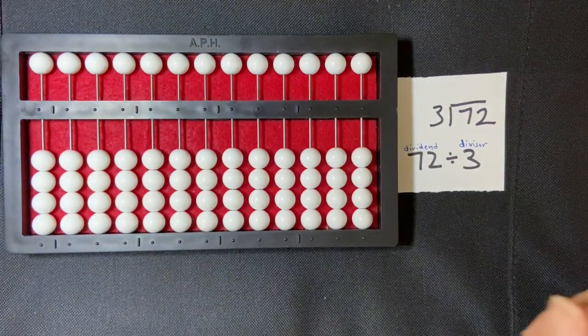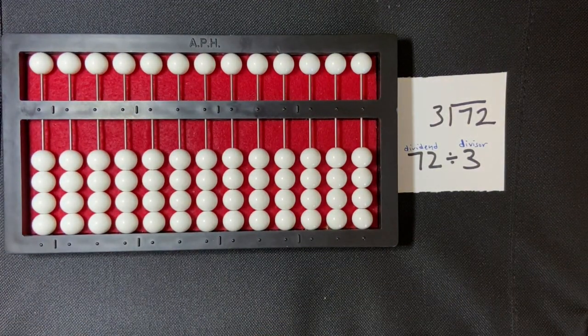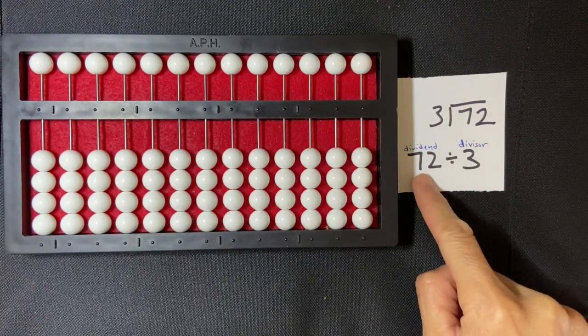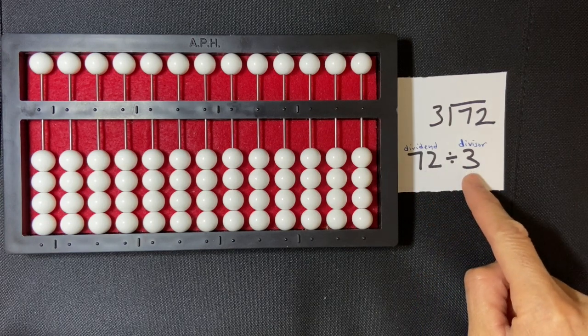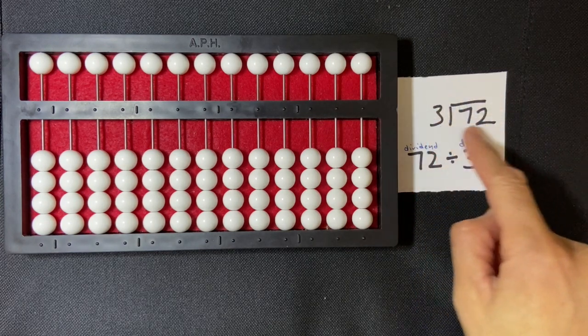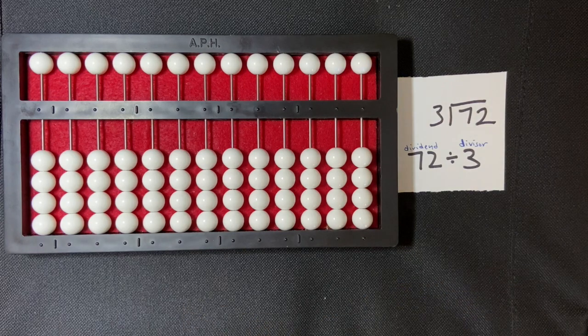Okay, we're going to be doing some division using the counting method, and I have a dividend of 72 divided by the divisor of 3. Sometimes it's written this way, so I put both on there for you to see.